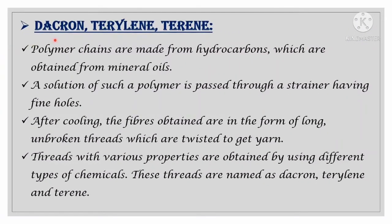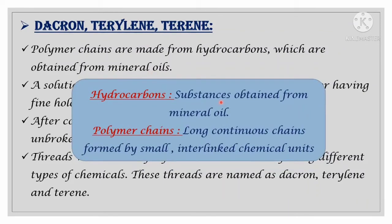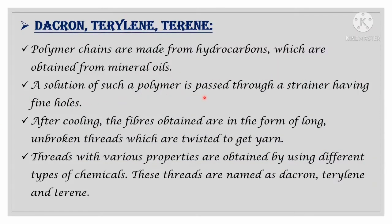Dacron, terylene, and tereen: polymer chains are made from hydrocarbons obtained from mineral oils. Hydrocarbons are substances obtained from mineral oil. Polymer chains are long continuous chains formed by small interlinked chemical units. A solution of such polymer is passed through a strainer having very fine holes. After cooling, the fibers obtained are in the form of long unbroken threads which are twisted to get yarn. Threads with various properties are obtained by using different types of chemicals, and are named dacron, terylene, and tereen.